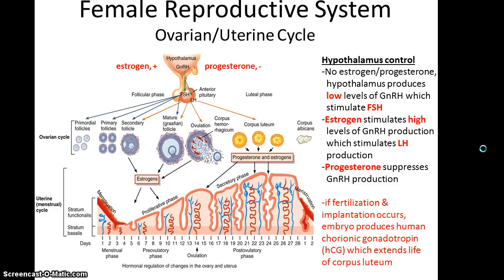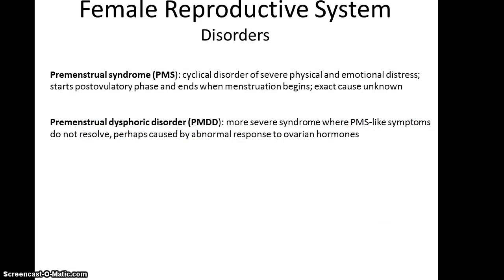If fertilization and implantation occur, the embryo — technically the placenta — begins producing human chorionic gonadotropin. This will extend the life of the corpus luteum, which means continued production of progesterone, essentially signaling that we do not need to start making another follicle because a fetus is going to develop. And that's how the cycle is all interrelated.